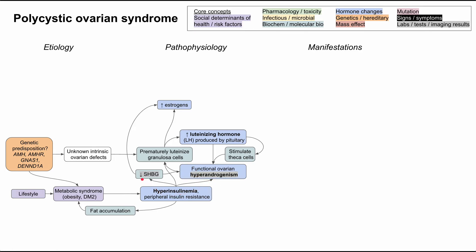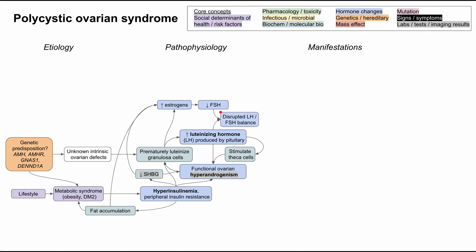So the pattern is: high insulin, low sex hormone binding globulin, high androgens, and high estrogens. Fat accumulation also tends to increase estrogen levels because there's peripheral production of estrogens in adipose tissue. Estrogens themselves have feedback on the pituitary gland and reduce follicle stimulating hormone. Because you have high LH and low FSH, you have a disrupted LH-FSH balance, and that leads to some of the manifestations.